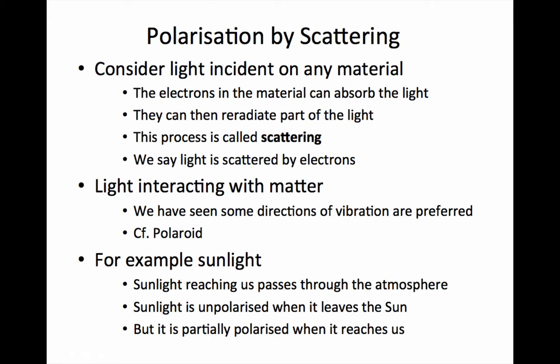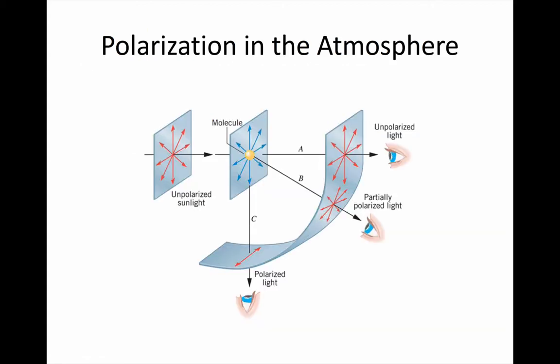This happens with sunlight hitting the atmosphere. If we are looking straight up into a blue sky, we can assume that the sun's rays are coming in roughly horizontally to hit molecules in the atmosphere above us. So the light hits the molecules and starts electrons oscillating.